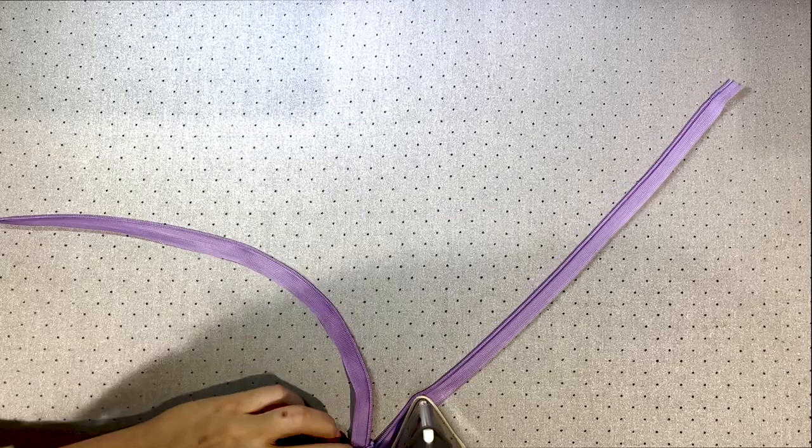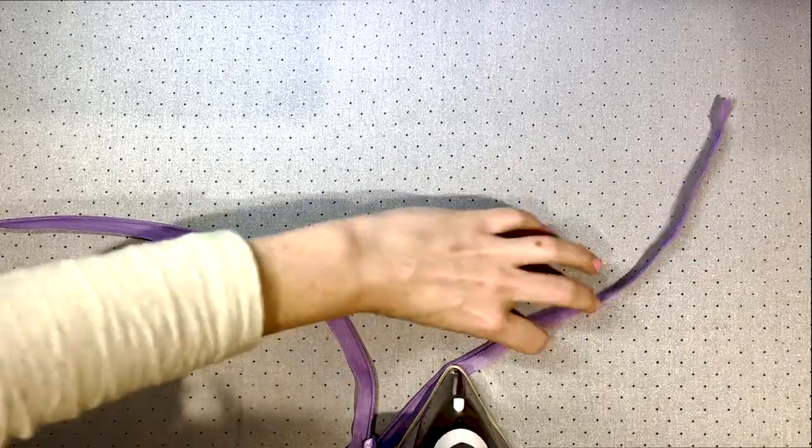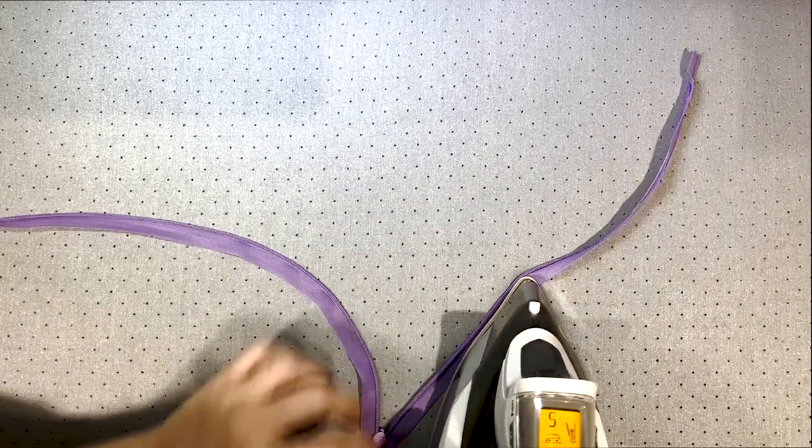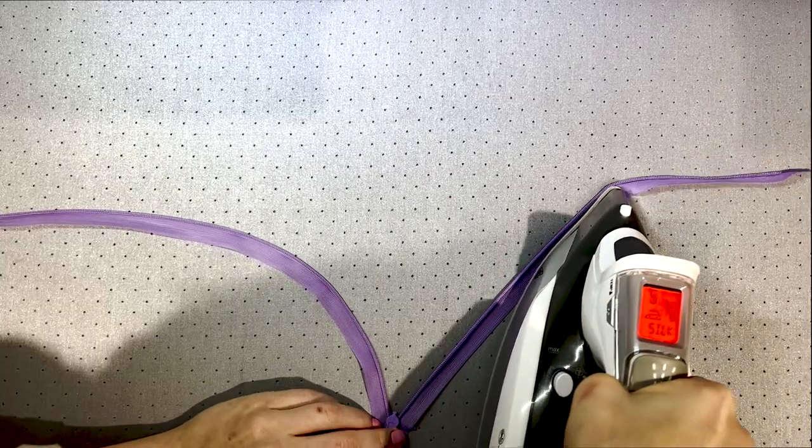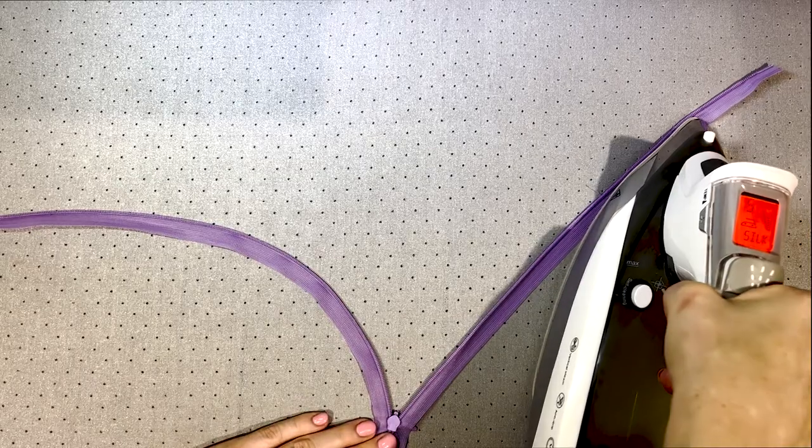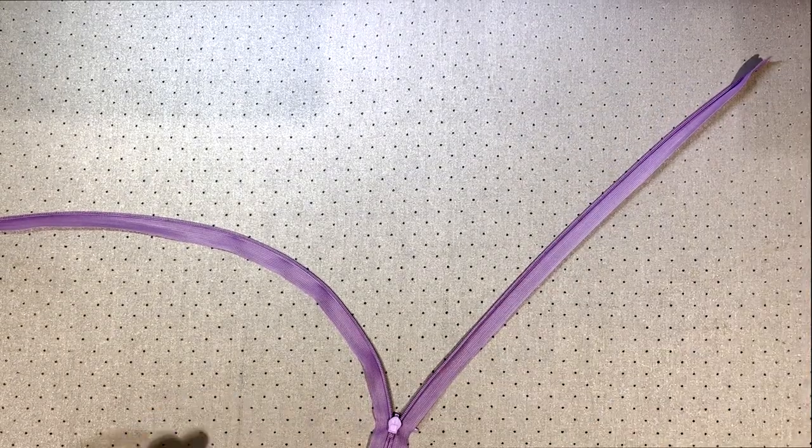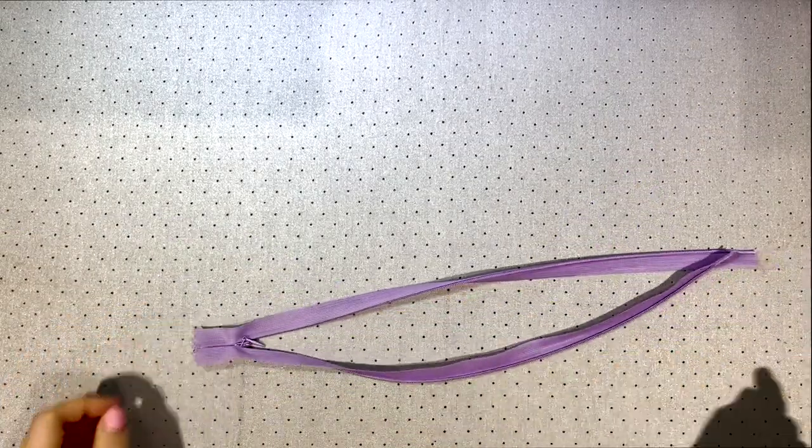Do both sides. Uncurling the teeth like this just allows you to stitch closer and is less chance of the zipper being visible at the end of the process. Set your zip aside for later.